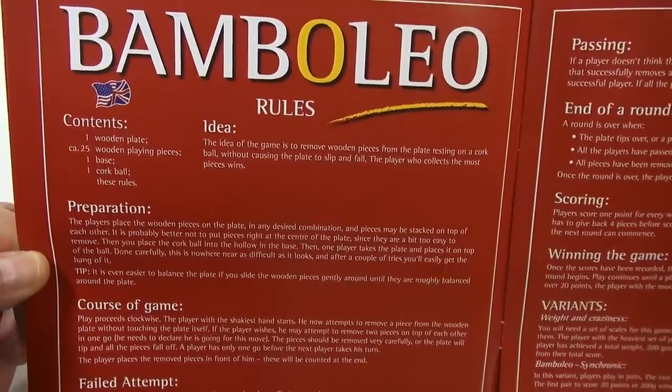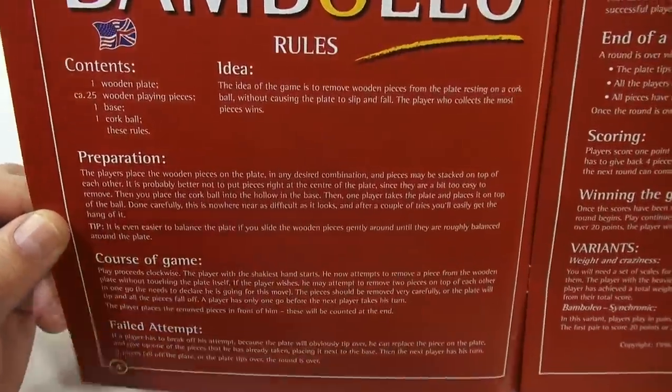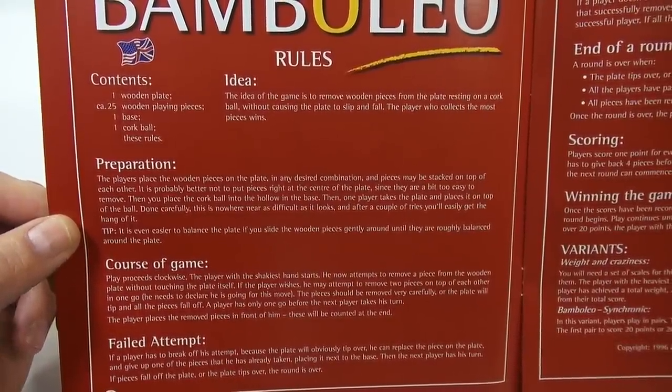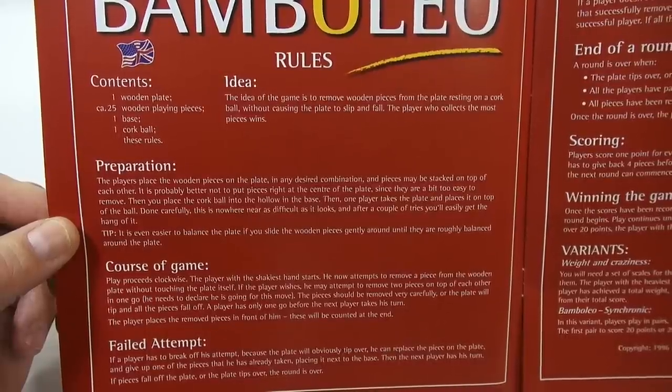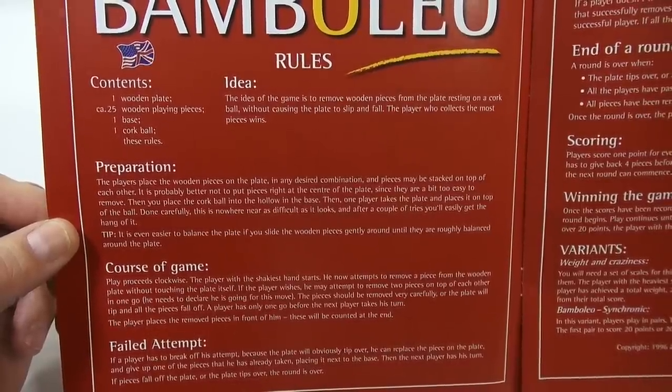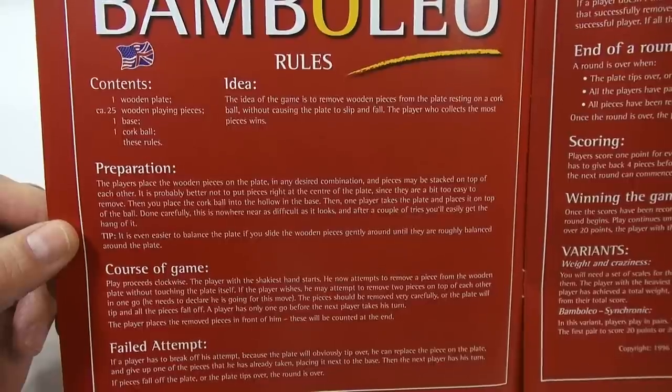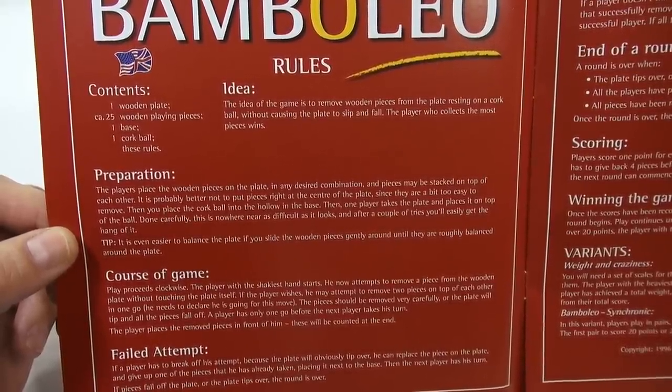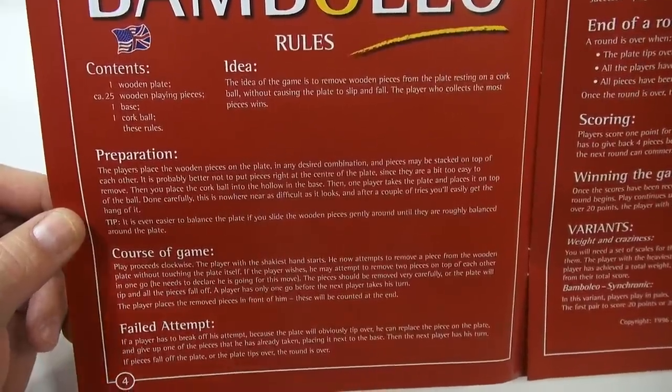Preparation: the players place wooden pieces on the plate in any desired combination. Pieces may be stacked on top of each other. It's probably better not to put pieces right at the center of the plate since they are a bit too easy to remove. Then you place the cork ball into the hollow in the base. Then one player takes the plate and places it on top of the ball. Done carefully, this is nowhere near as difficult as it looks. After a couple of tries you'll easily get the hang of it.